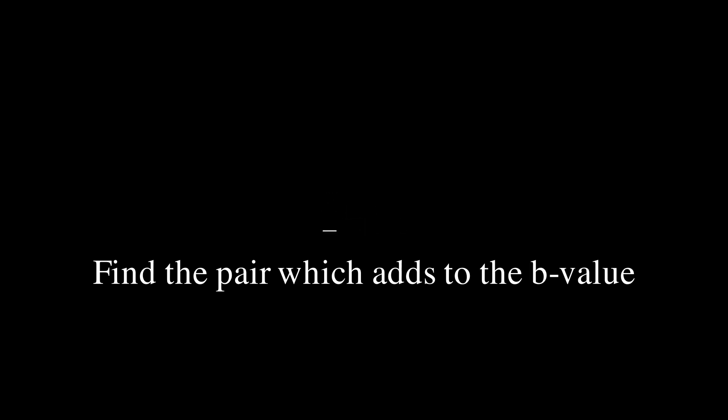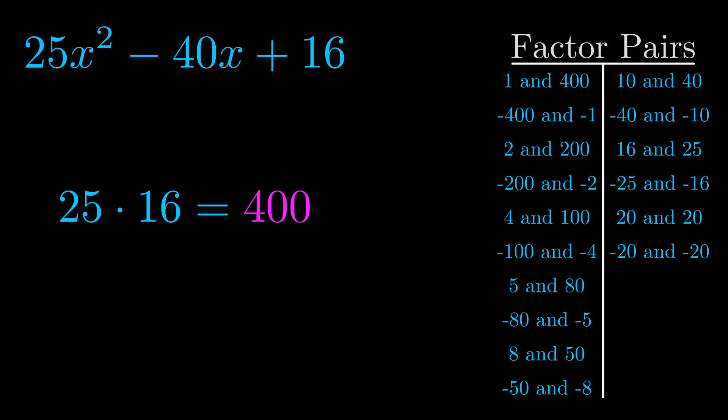The b value is the coefficient on the x term. That's the middle term, the one that we haven't done anything with yet. And really this is the only factor pair that we need.